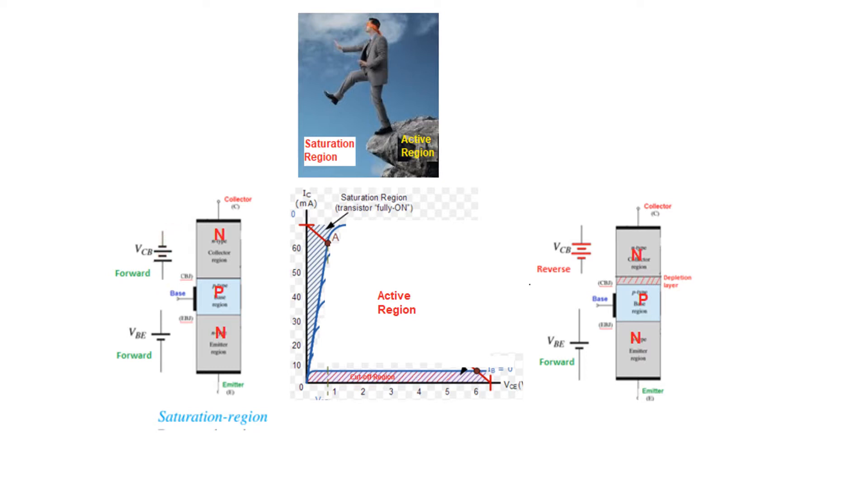So that is the difference. The moment this base collector junction turns at the end of reverse bias and at the beginning of forward bias, that is the point we call edge of active region or edge of saturation region.